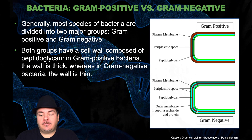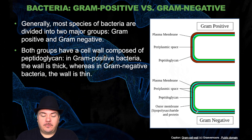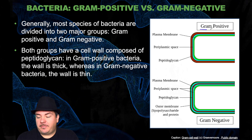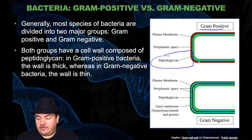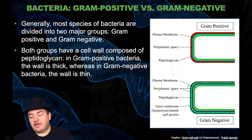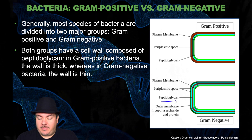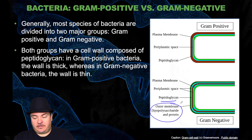We have gram-positive bacteria and gram-negative bacteria — most species are divided into these two major groups. Both groups have a cell wall composed of peptidoglycan. In gram-positive bacteria, this wall is very thick, whereas in gram-negative bacteria, the wall is thin. In gram-negative bacteria, we find a much thinner peptidoglycan layer, and outside of that there's a second, outer membrane.